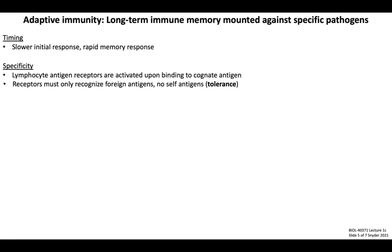Adaptive immune responses are activated with a high degree of specificity, made possible by the expression of lymphocyte antigen receptors on the surface of adaptive lymphocytes. These receptors trigger a cellular activation state upon binding to cognate antigen — the term given to the unique antigen that fits into the binding region of an individual lymphocyte antigen receptor. Much like pattern recognition receptors of innate immunity, lymphocyte antigen receptors must also maintain immune tolerance by recognizing only foreign antigens while remaining unresponsive to self-antigens.